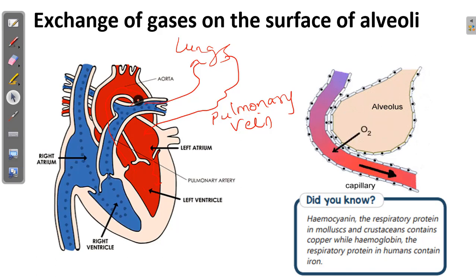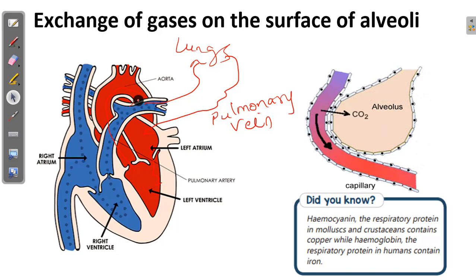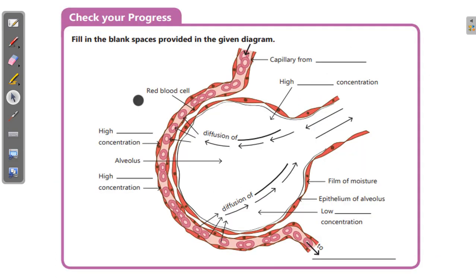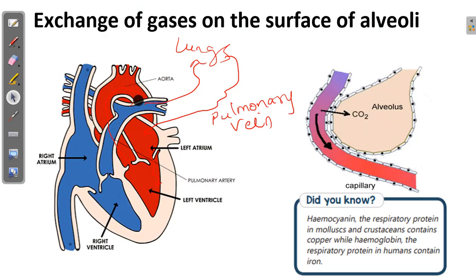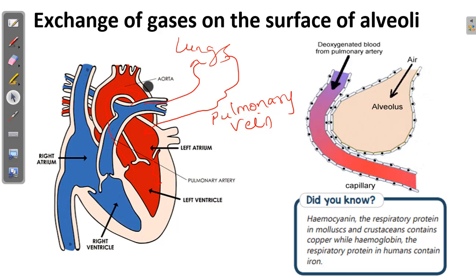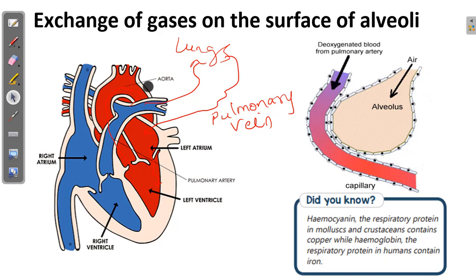This is a very important concept. Remember that diffusion is the process which helps in exchange of gases at the surface of alveoli. Now, regarding coronavirus — when the virus enters your body and if not treated properly, it goes into the alveoli and inflames them. Inflammation means the alveoli become enlarged. When alveoli become enlarged, the blood vessels start moving away from them and are no longer in contact with the alveoli.